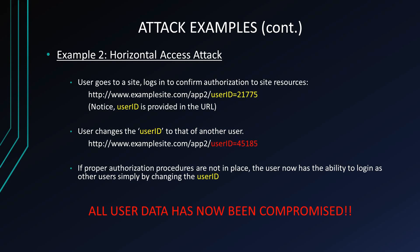The second example looks at horizontal access attacks. A user logs in with their authorization and the URL displays their user ID — for instance, 21775. An attacker sees that user ID in the URL and thinks: what if I change that ID to another user's ID? If proper safeguards are not in place, the authenticated user is actually able to view another user's information. Simply by changing the user ID, the other user's information is displayed and compromised.